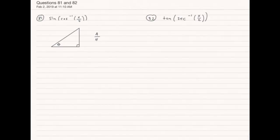So if I know that cosine is adjacent over hypotenuse, and I know the input to my inverse cosine is x over 4, then x is the adjacent side, and 4 is the hypotenuse.